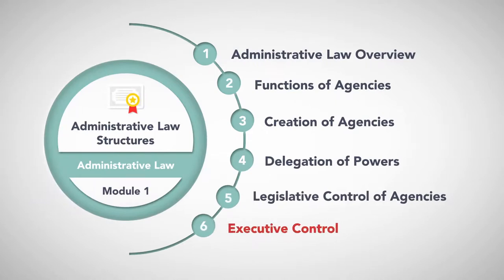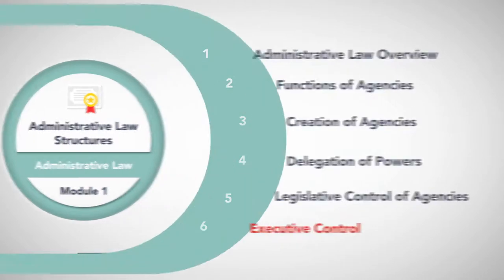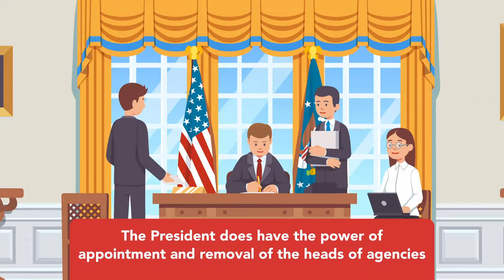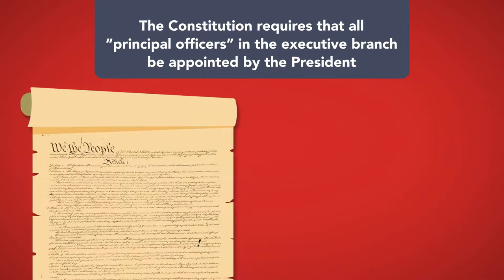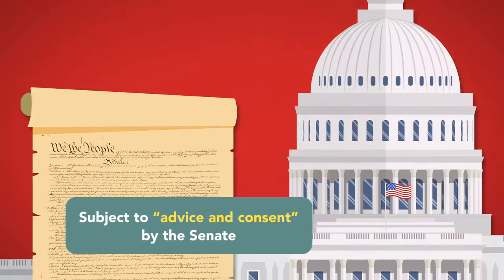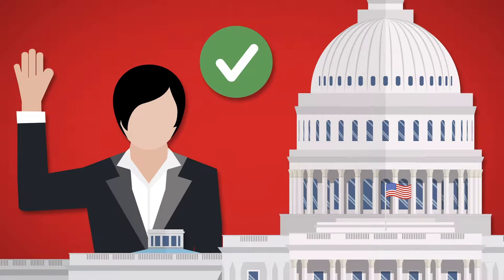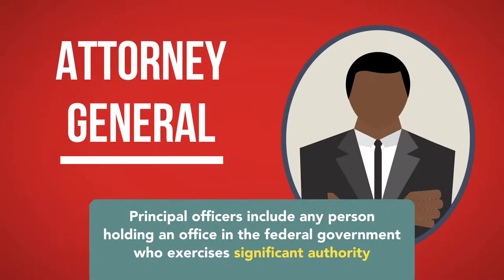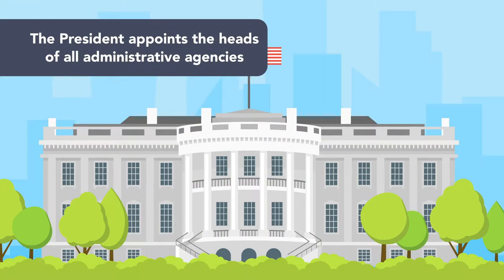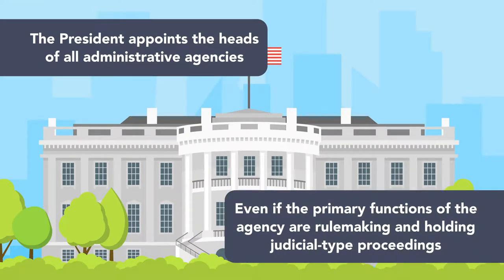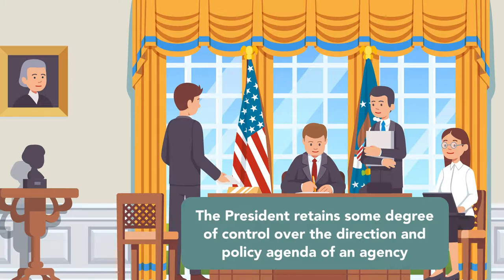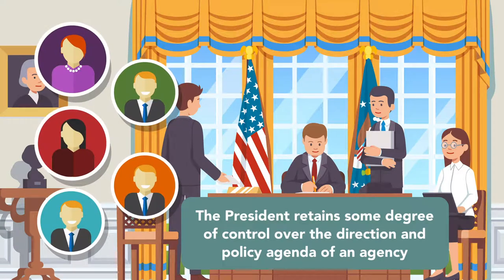Executive Control. While agencies are created to operate independently of the executive branch in their day-to-day operations, the President does have the power of appointment and removal of the heads of agencies. The Constitution requires that all principal officers in the executive branch, including those in administrative agencies, be appointed by the President, subject to advice and consent by the Senate, which means that the Senate must confirm the appointment before she can take office. Principal officers include any person holding an office in the federal government who exercises significant authority. As such, the President appoints the heads of all administrative agencies, even if the primary functions of the agency are rulemaking and holding judicial-type proceedings. In this way, the President retains some degree of control over the direction and policy agenda of an agency through the selection of officers who share the President's governing approach.